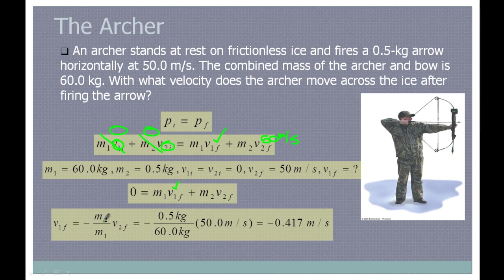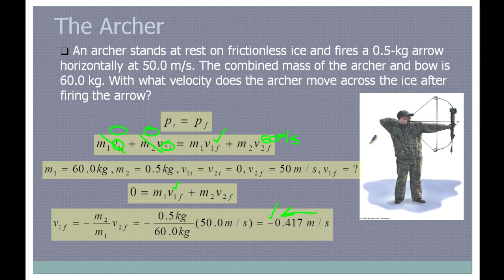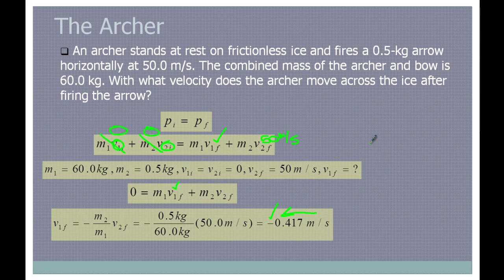We solve for V1F. Rearrange your equation, plug in numbers, do the calculations — kilograms cancel, leaving meters per second. The bow and archer are going to move backwards: the negative sign means he's moving in the opposite direction, at negative 0.417 meters per second. He's going to move backwards when he shoots that arrow.